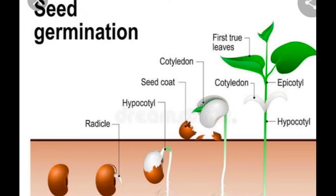Children, you know that when a seed gets enough water, air and sunlight, it grows into a new plant. The growth of a baby plant within a seed to form a seedling is called germination. In the beginning of germination, a seedling gets its food from the cotyledons.